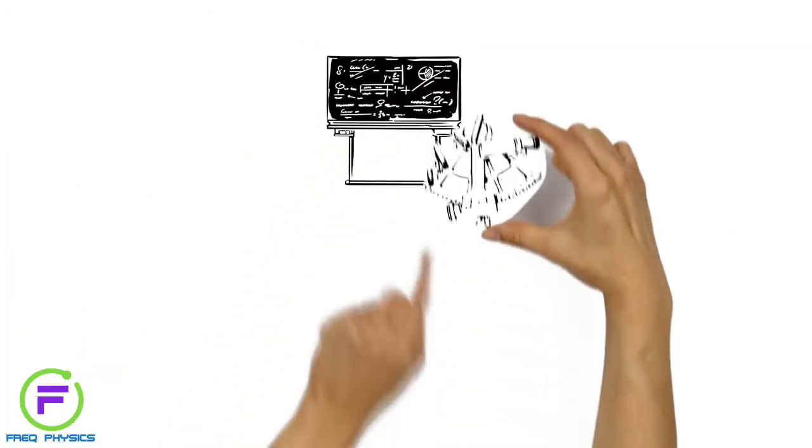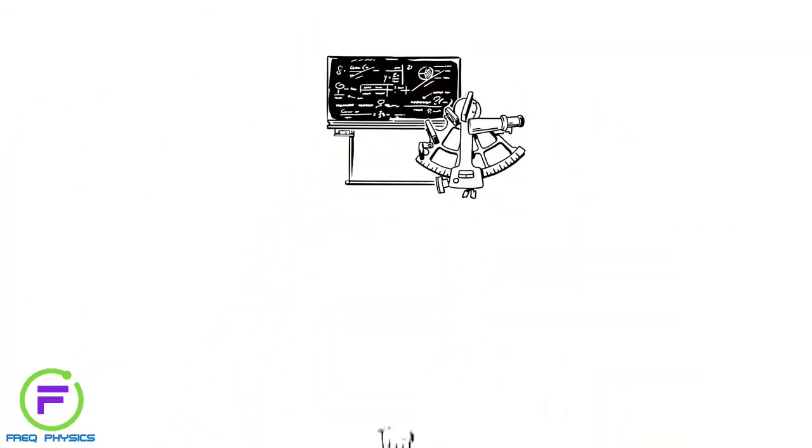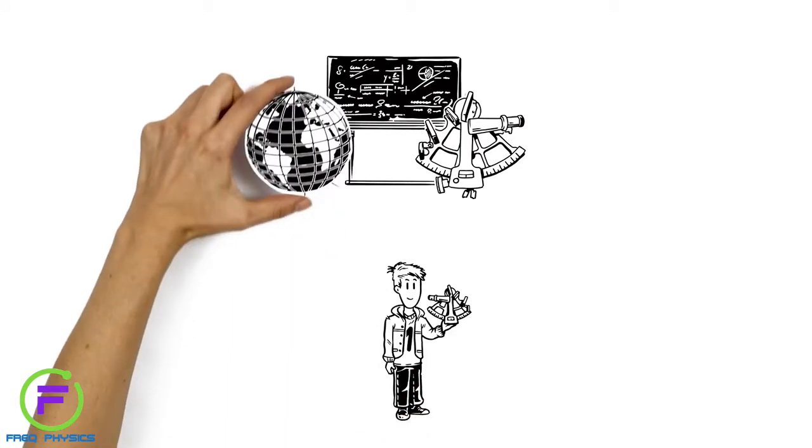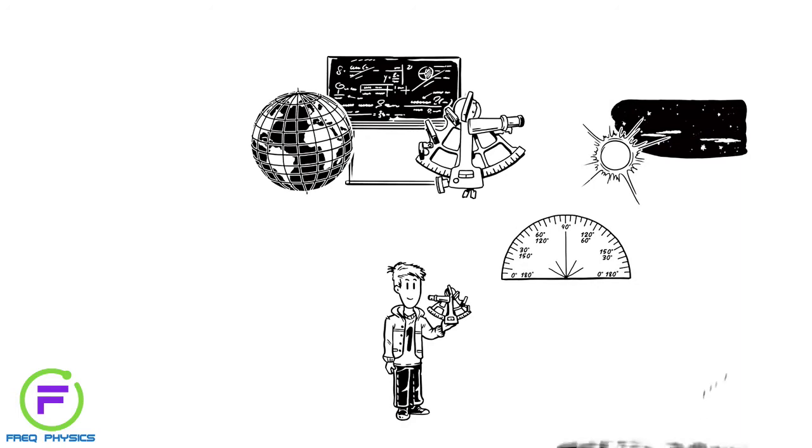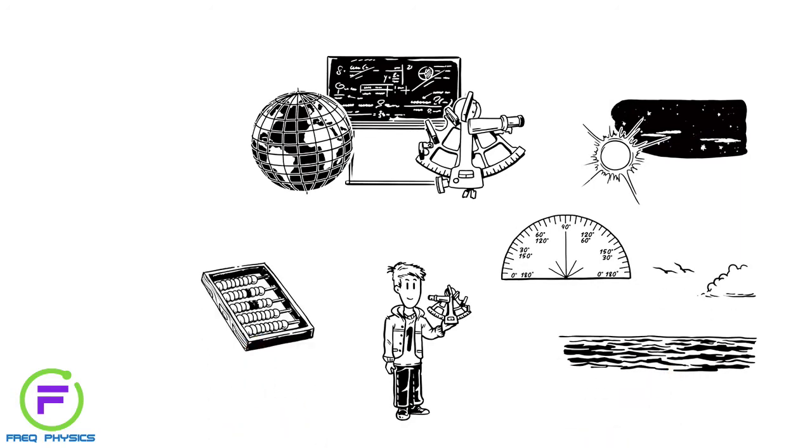Using maths and a tool called a sextant, navigators could find their latitude and longitude by measuring the angle between two objects relative to the horizon. It was very complicated, involving calculations, celestial maps and charts.